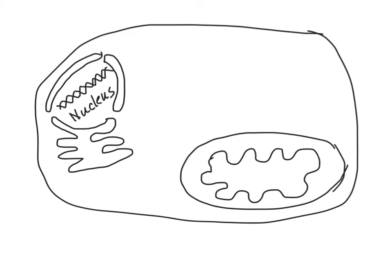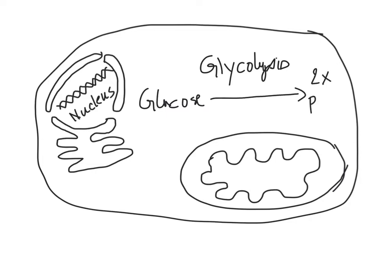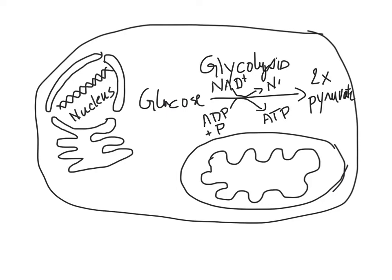We're going to take a eukaryotic cell for simplicity's sake. We have a cytoplasmic region where glycolysis takes place, where the glucose molecule is broken up, ultimately resulting in the formation of two molecules of pyruvate. This leads to the production of some ATP — from the addition of phosphate to an existing molecule of ADP — as well as the reduction of NAD+ into NADH, NAD+ having picked up some electrons from the glucose molecules.